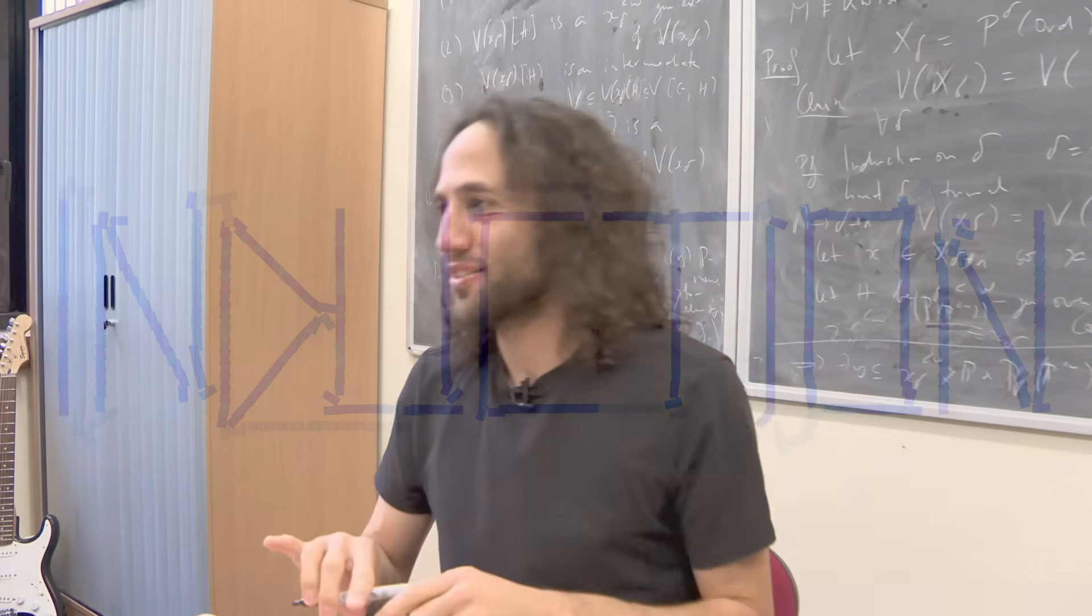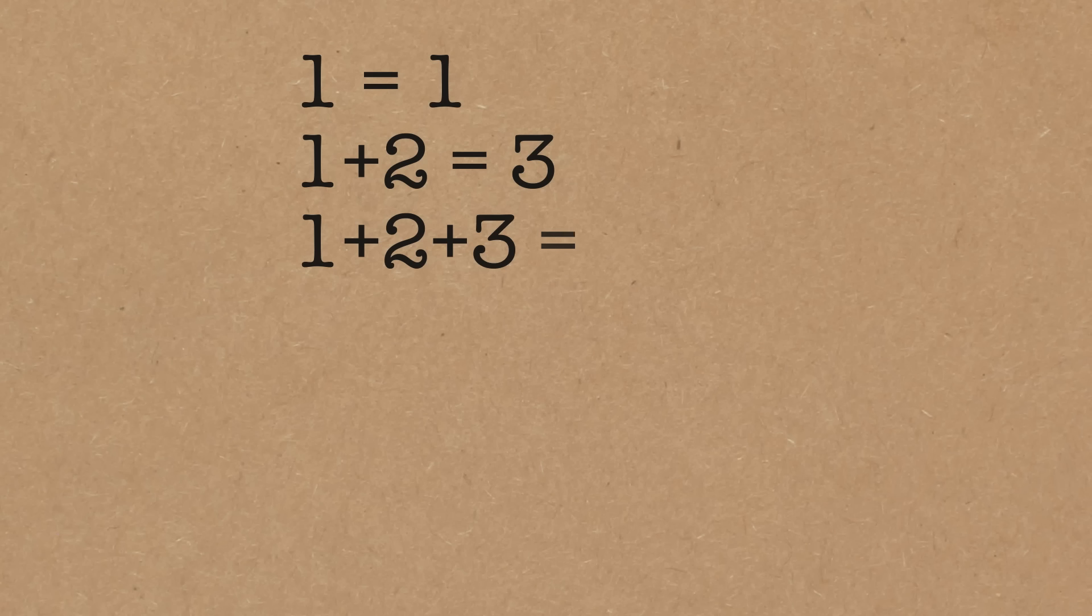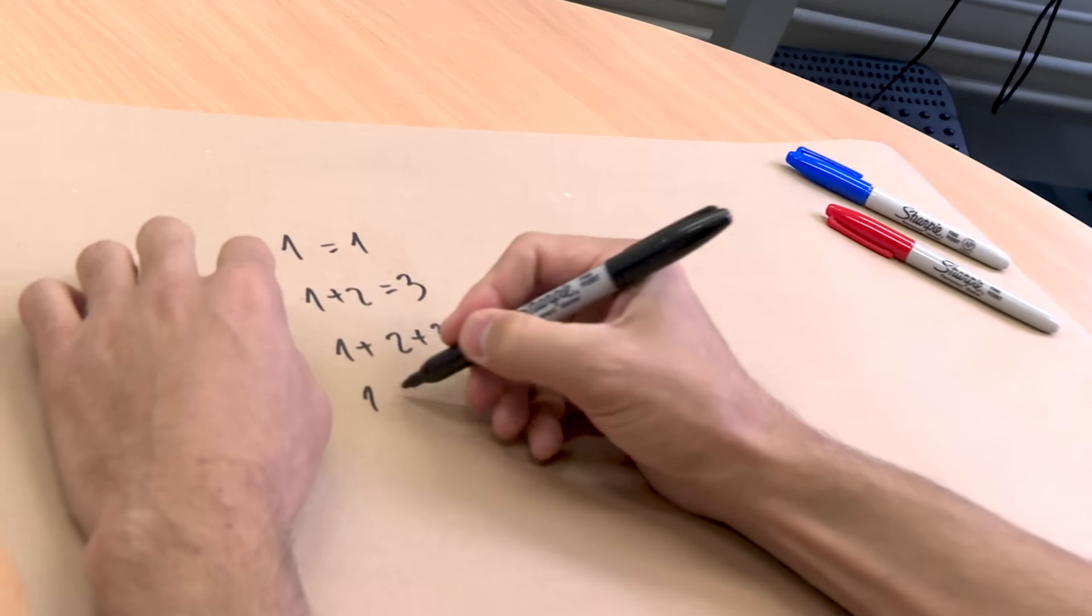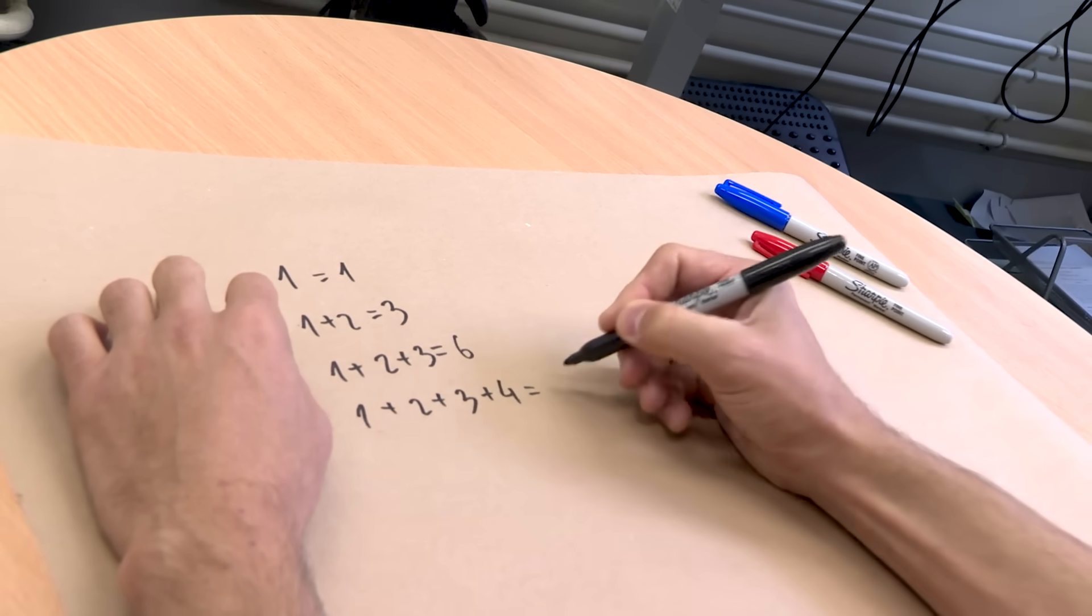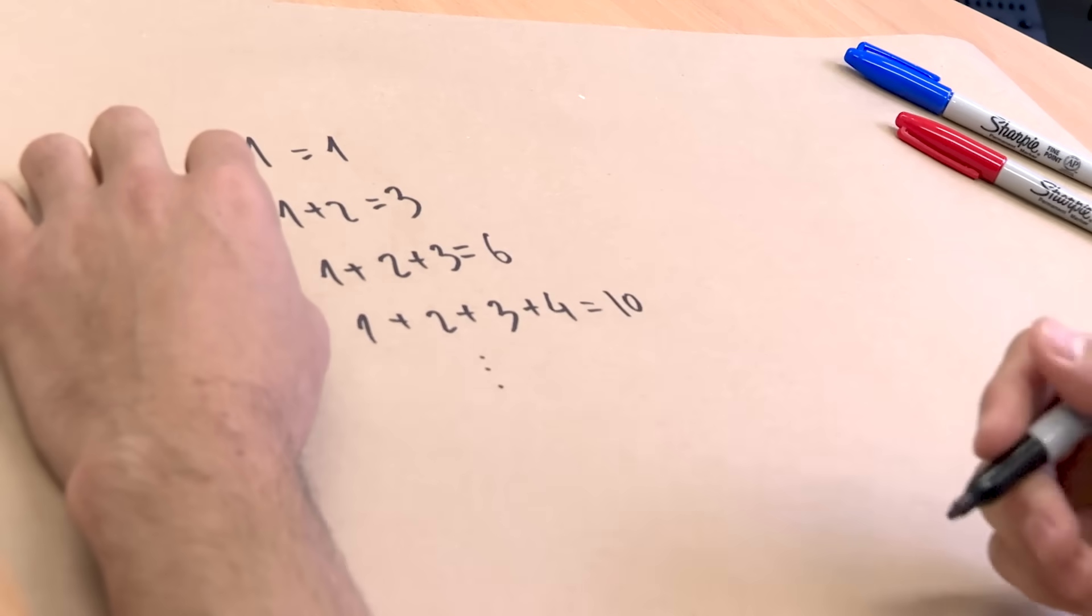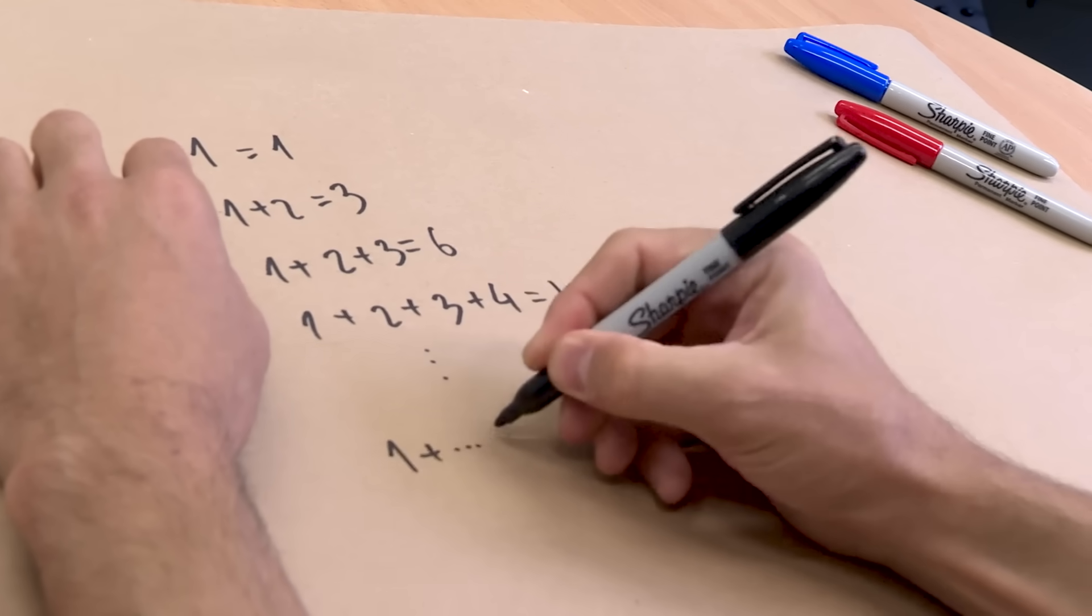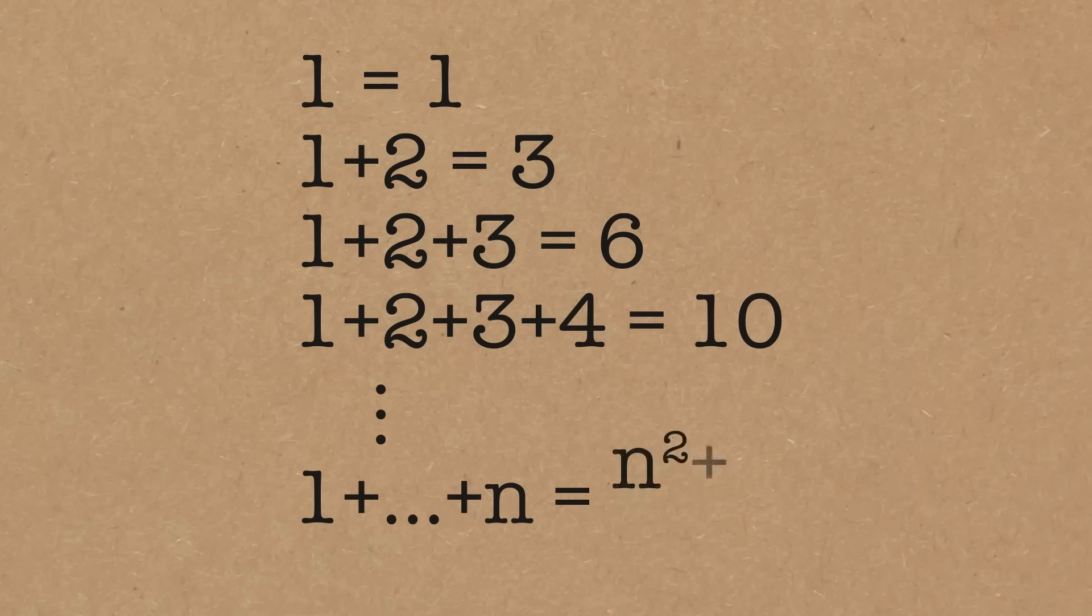So let's start with the example, something very classic. So 1 is just 1. 1 plus 2 is 3. 1 plus 2 plus 3 is 6. 1 plus 2 plus 3 plus 4 is 10. We can continue this. Or maybe you know the formula that 1 plus all the way up to n equals n squared plus n divided by 2.